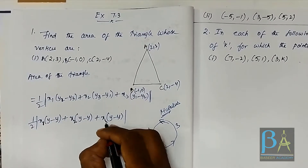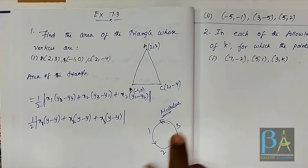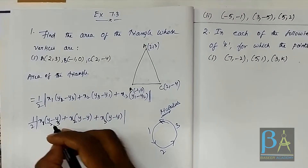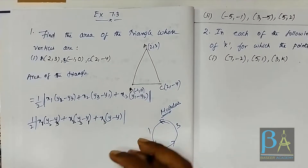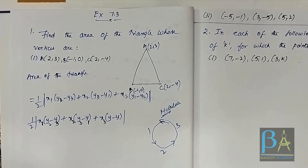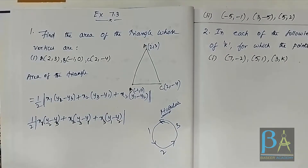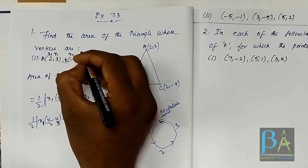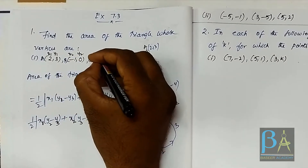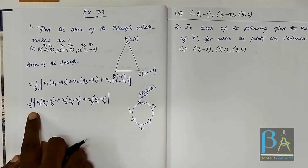So we write x1, x2, x3 with subscripts following that pattern. This gives x1(y2 - y3) + x2(y3 - y1) + x3(y1 - y2). Now this is our point (x1, y1), this is (x2, y2), and this is (x3, y3). Let us substitute these values into the formula.